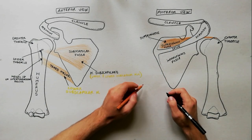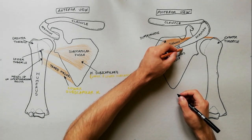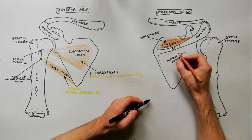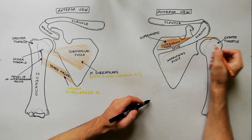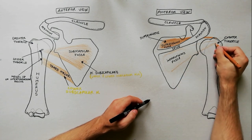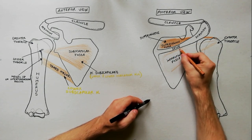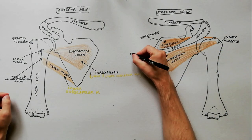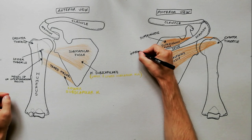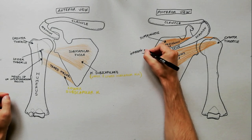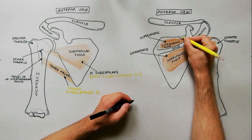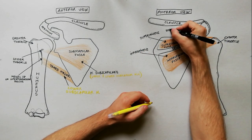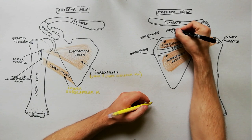The infraspinatus muscle originates from the infraspinous fossa. Its insertion is on the greater tubercle of humerus just inferior to the insertion of supraspinatus. These two muscles are supplied by the suprascapular nerve.